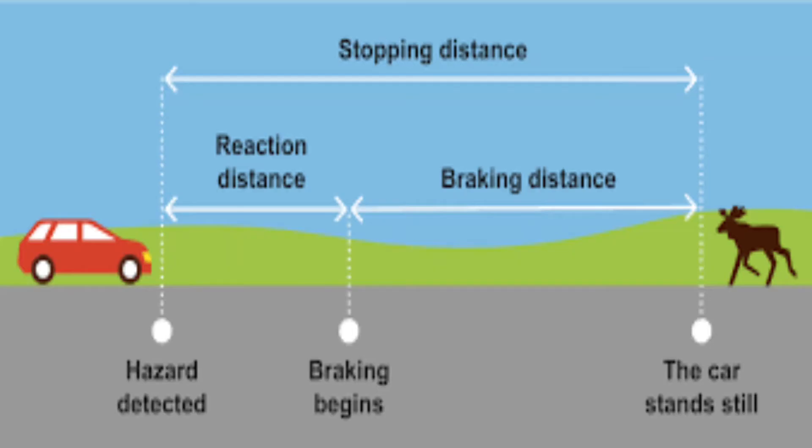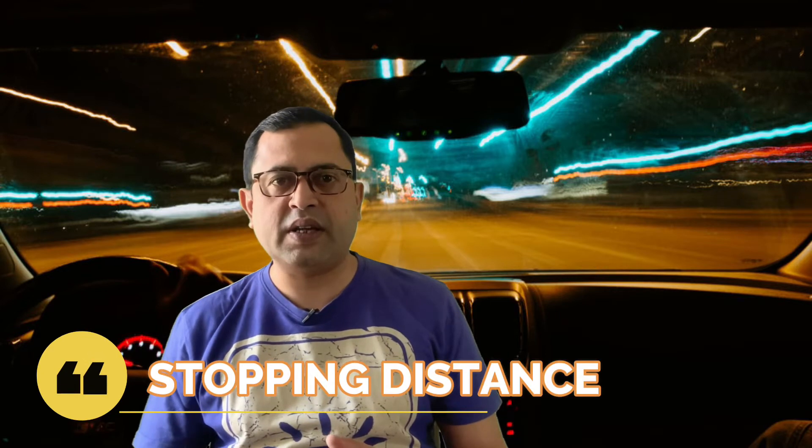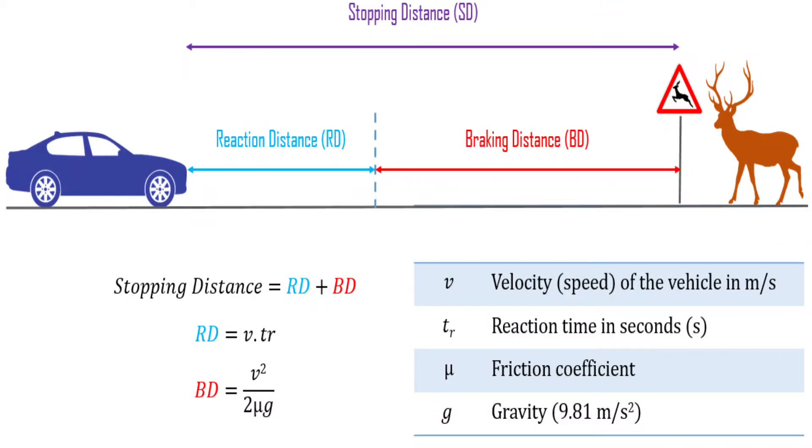So by the time you realize danger and slam the brakes, you have already taken 1.5 seconds. The reaction distance is the distance the car has traveled from the time you detect a hazard until you press the brake pedal or swerve. We need to consider both: reaction distance — the distance traveled during reaction time — and braking distance — the distance traveled after you apply the brakes. Together, these are called stopping distance: the total distance from when you observe an obstruction to when the vehicle actually stops.